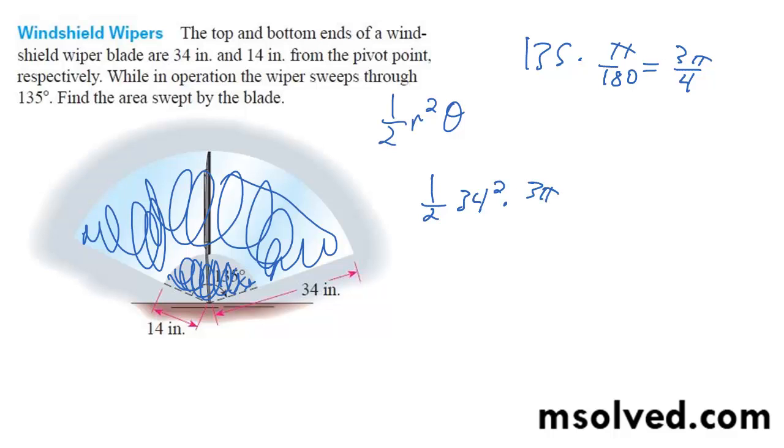So we've got 3 pi over 4. And then minus 1 half, 14 squared times 3 pi over 4.